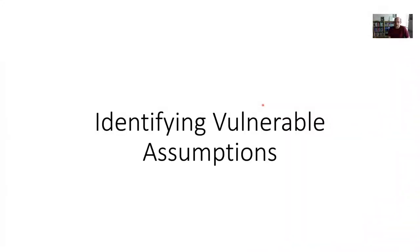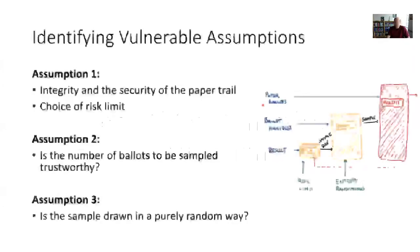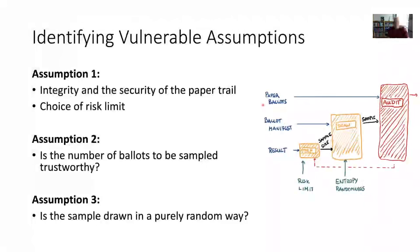Let me talk about identifiable vulnerable assumptions in risk-limiting audits — I'd like to point out three. The first is that the integrity and security of the paper trail is intact for an audit. After ballots are cast on election day and before the audit commences — usually a few days or weeks — we need to make sure the paper trail is secure, assuming the security mechanisms in place are sufficient.